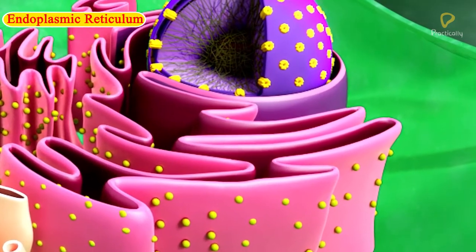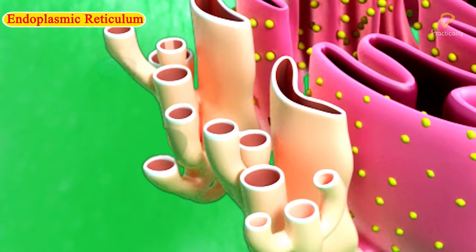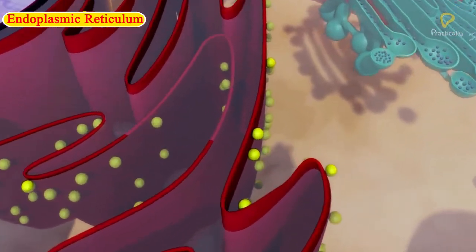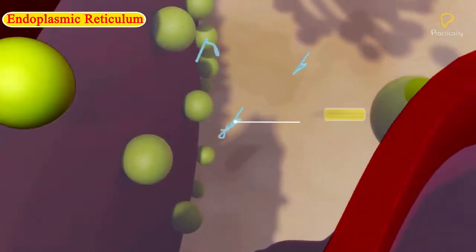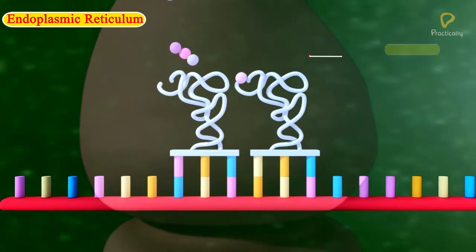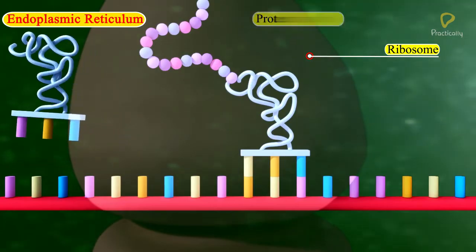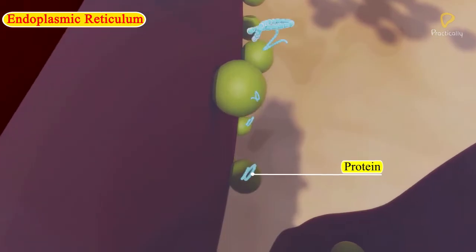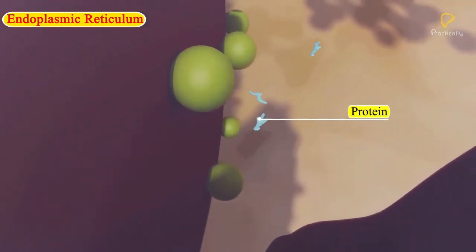Rough endoplasmic reticulum (RER) and smooth endoplasmic reticulum (SER). RER looks rough under a microscope because it has particles called ribosomes attached to its surface for synthesizing proteins. The ribosomes, which are present in all active cells, are the sites of protein synthesis. The synthesized proteins are then sent to various places in the cell depending on need, using the endoplasmic reticulum.